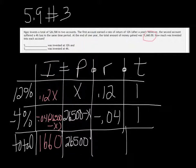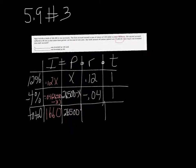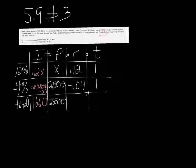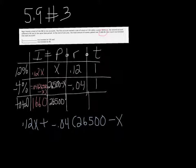This column, the interest column, is what's going to give us our equation for this problem. So if we add the interest in each account, it would be 0.12X plus the negative 0.04 times 26,500 minus X, it's going to equal 1,660. The interest from one account plus the interest from the other is going to be 1,660.